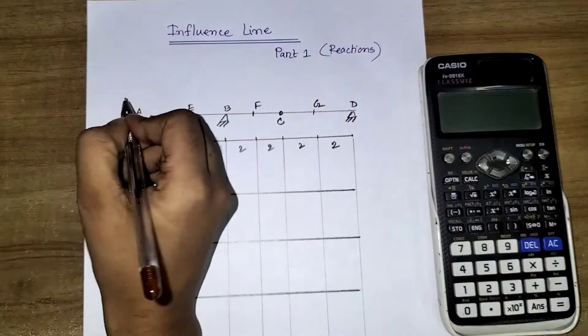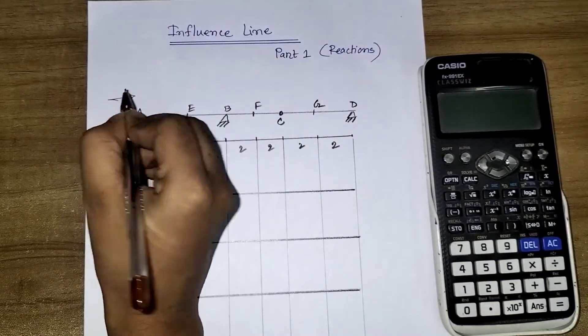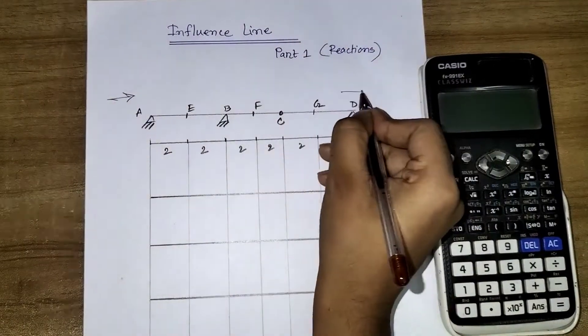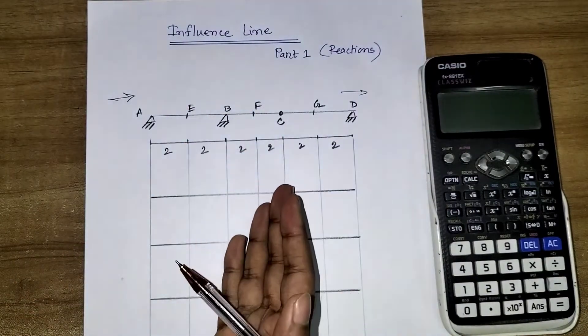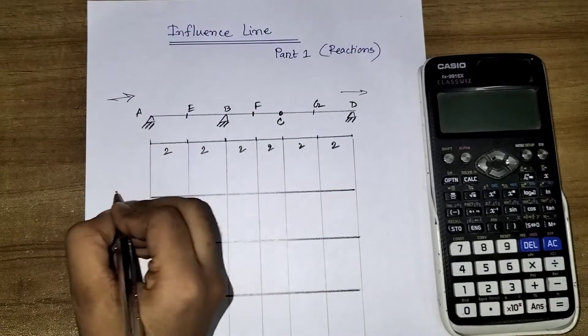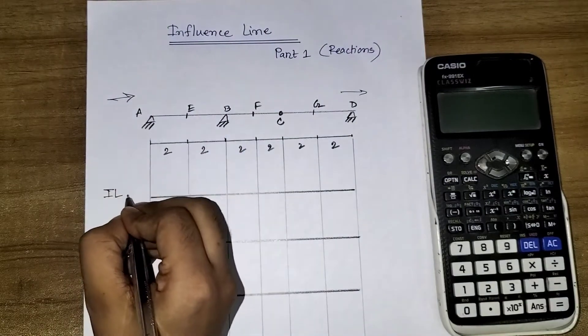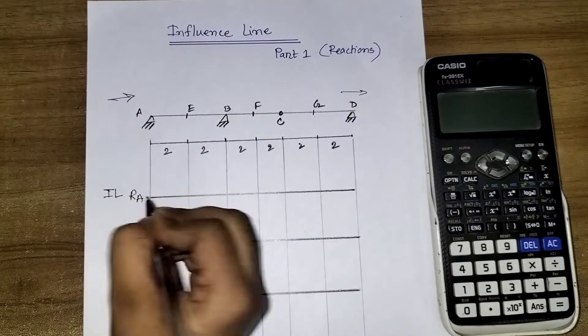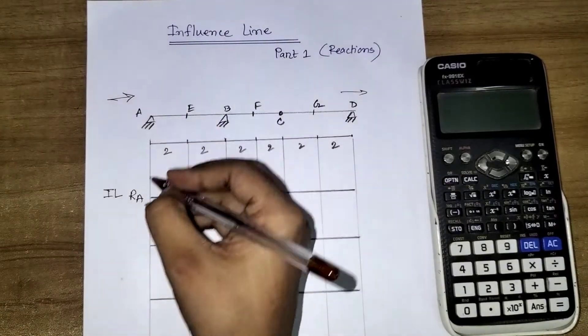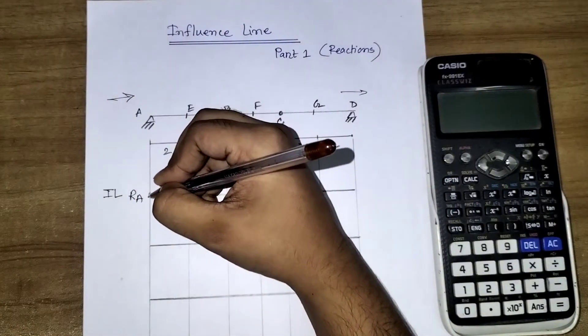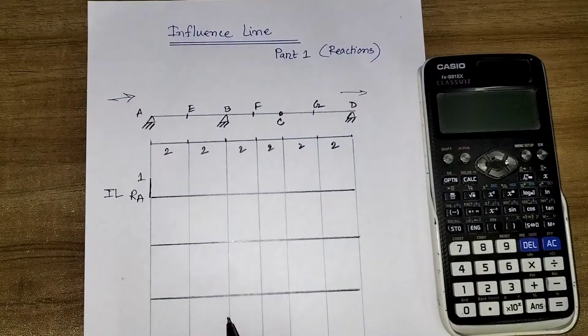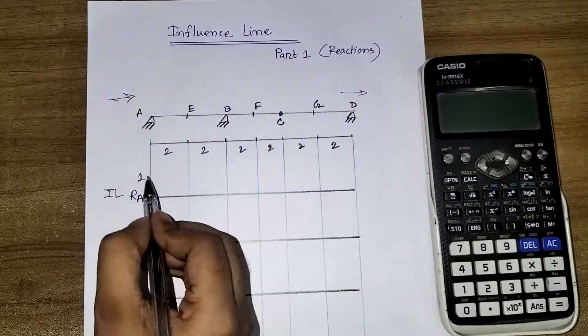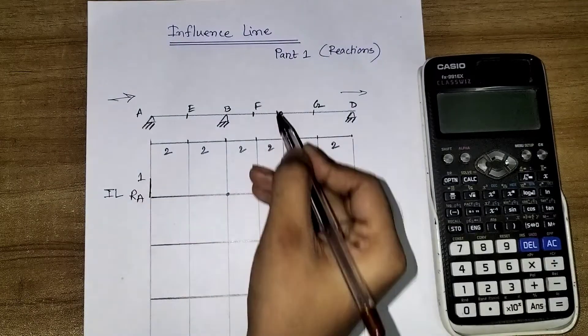Here the load is gonna move towards this direction. So at this support, what will be the IL? IL for RA, reaction at A. Here I'm gonna draw one unit movement upwards, and then it is directed to this point to C.